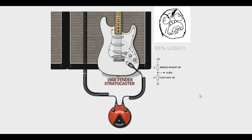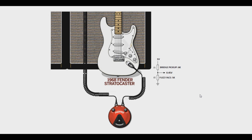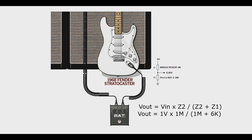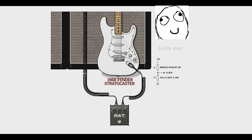This is a loss of more than 50% of our original pickup output. As you can see, the input impedance of the Fuzz Face has loaded down the pickup and caused a severe loss of signal. If we replace the Fuzz Face with the ProCo RAT2, which has a much higher input impedance of 1 megaohm, now it'll be 1 volt times 1 million over 1 million 6 thousand, which equals 0.994 volts. Now we've only lost less than a percent of our signal, which is way better.